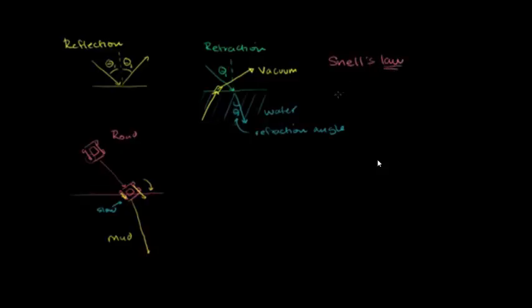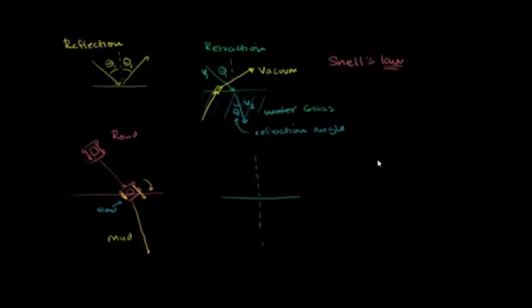Let me redraw the diagram more cleanly. Instead of vacuum and water — which is an unnatural interface — let's use vacuum and glass, which actually exists. So we have our incident ray traveling in the vacuum at V1. In the case of a vacuum, it's actually going at the speed of light, which is C — 300 million meters per second. That is the speed of light in a vacuum — an area of space with no air, no gas, no molecules, nothing in it.